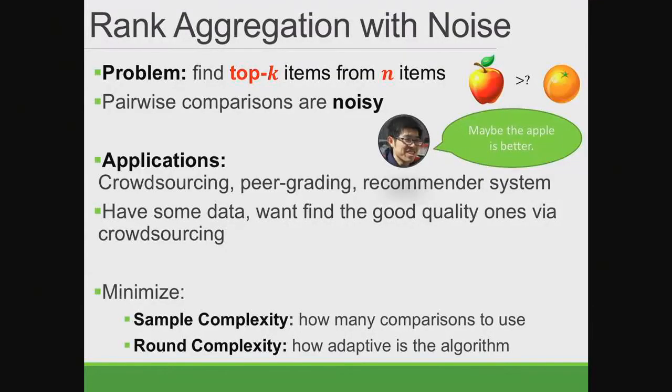To summarize the first half: in theorem one, if the buyer simply uses a mean-based learning algorithm, the seller can extract full welfare. In theorem two, if the buyer uses a tailored learning algorithm, the seller cannot get non-trivial revenue. In theorem three, we study the more realistic setting where the buyer never overbids — the revenue is in between, characterized by a linear program.